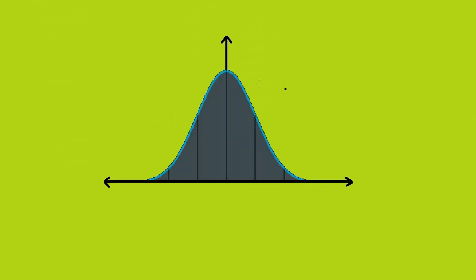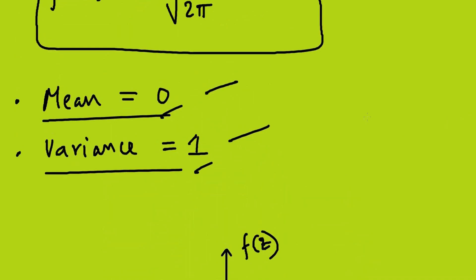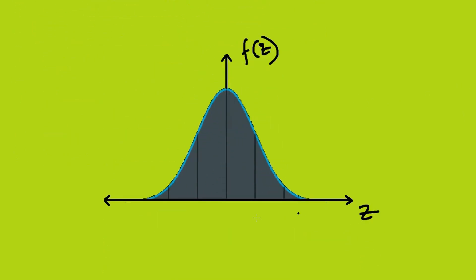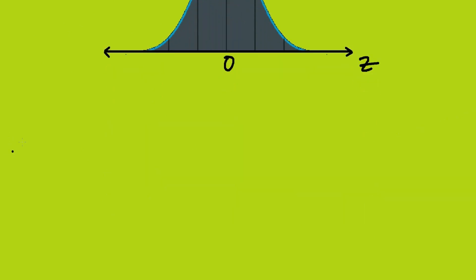For standard normal distribution, the curve is plotted with f(z) on the y-axis and z on the x-axis. As the mean is 0, the curve is symmetric about 0. Now let's study the area properties, which are very important for solving problems.